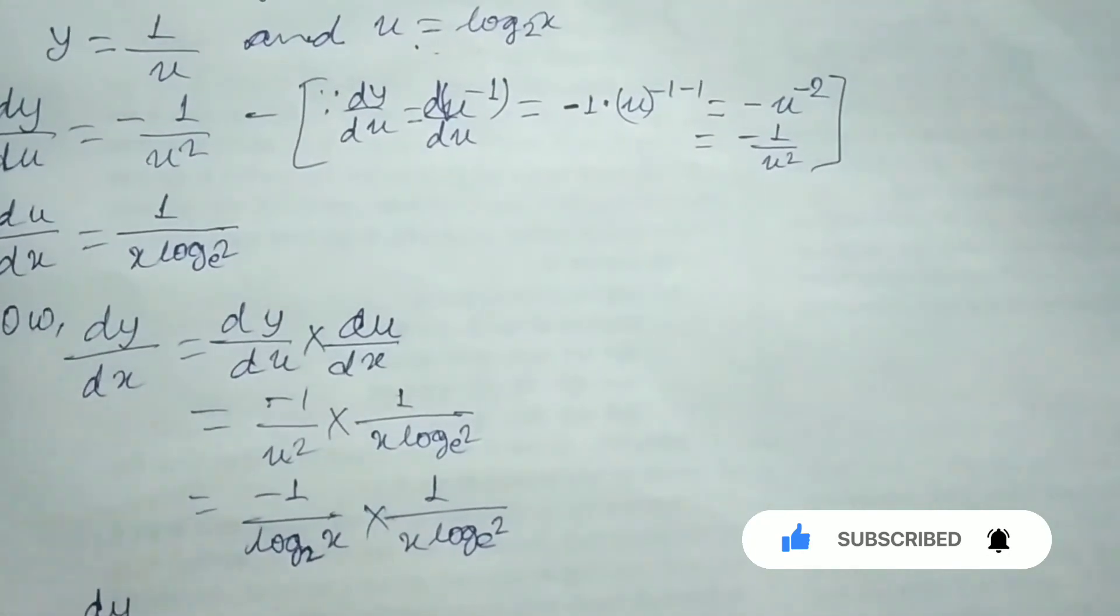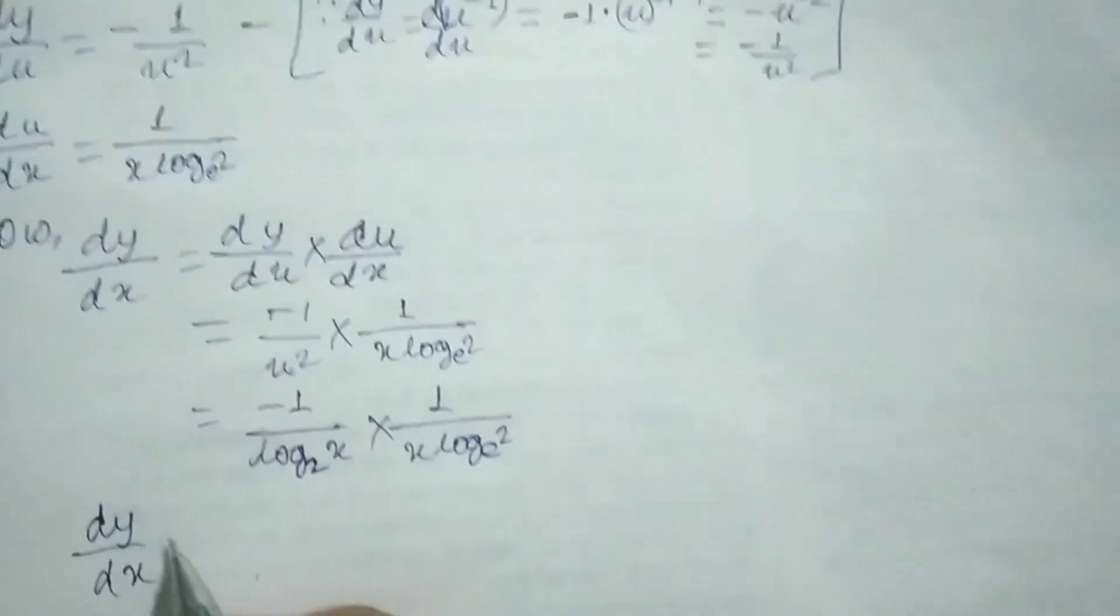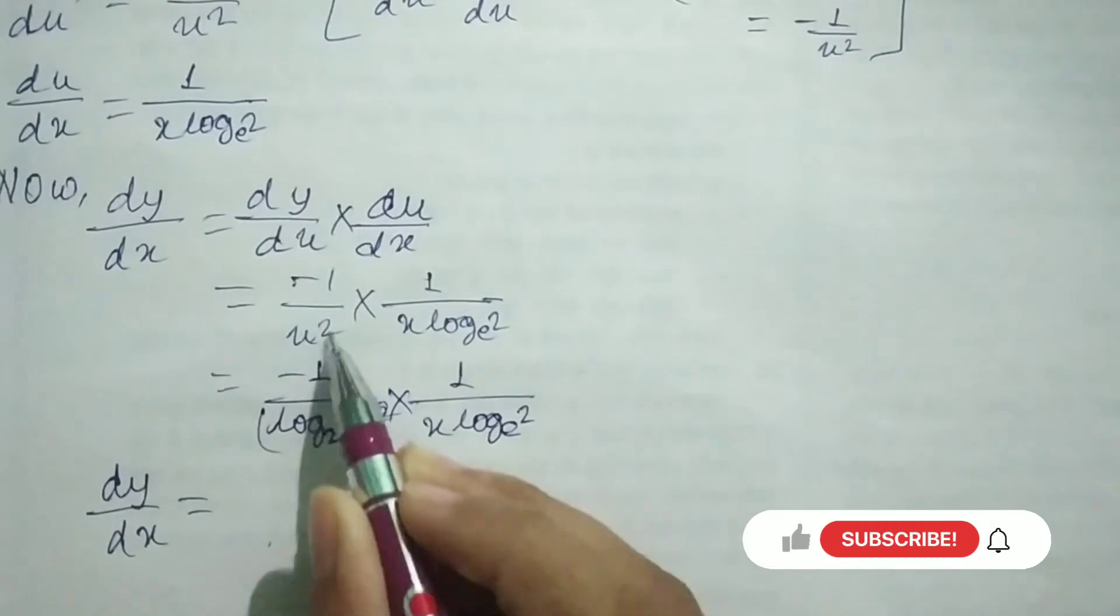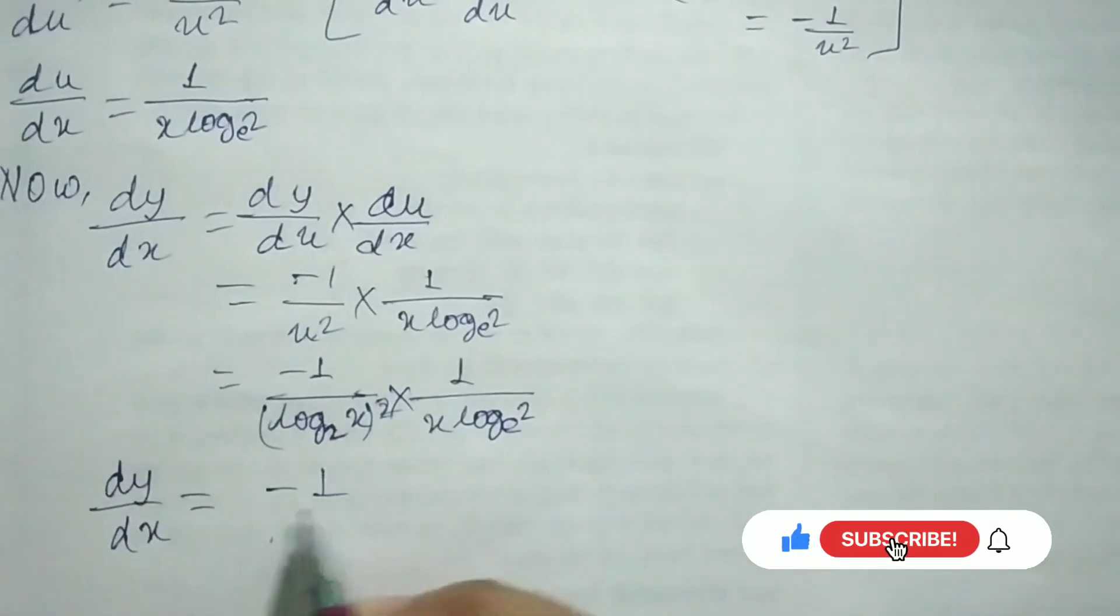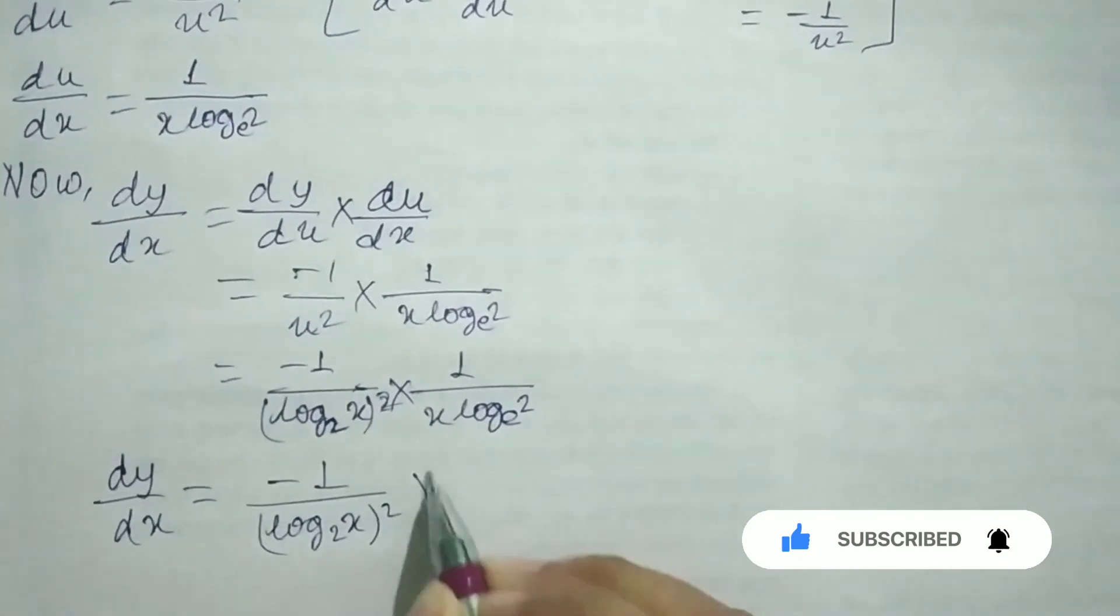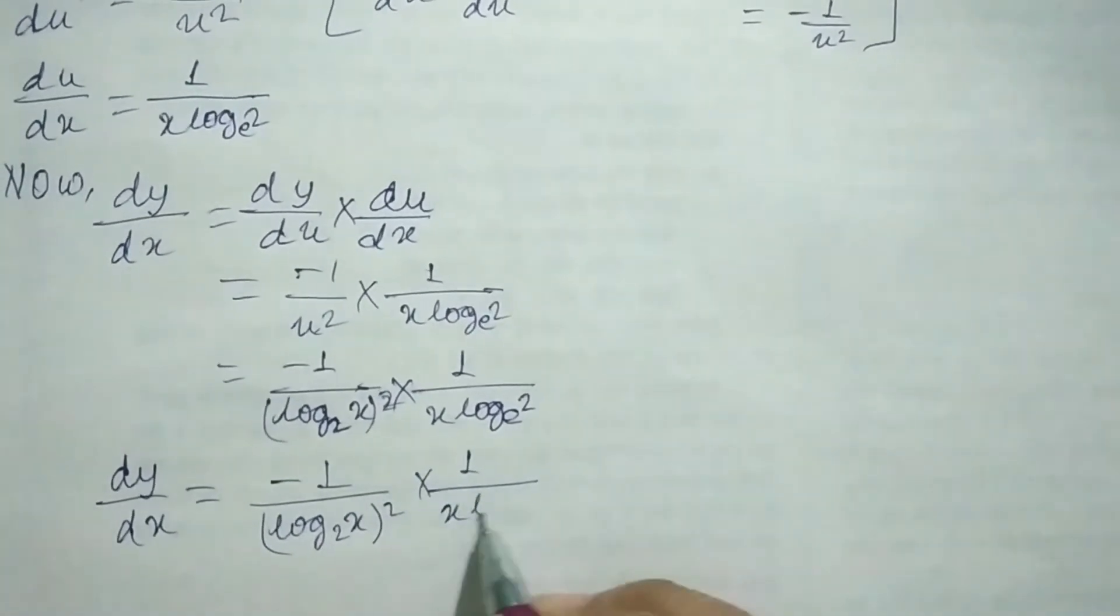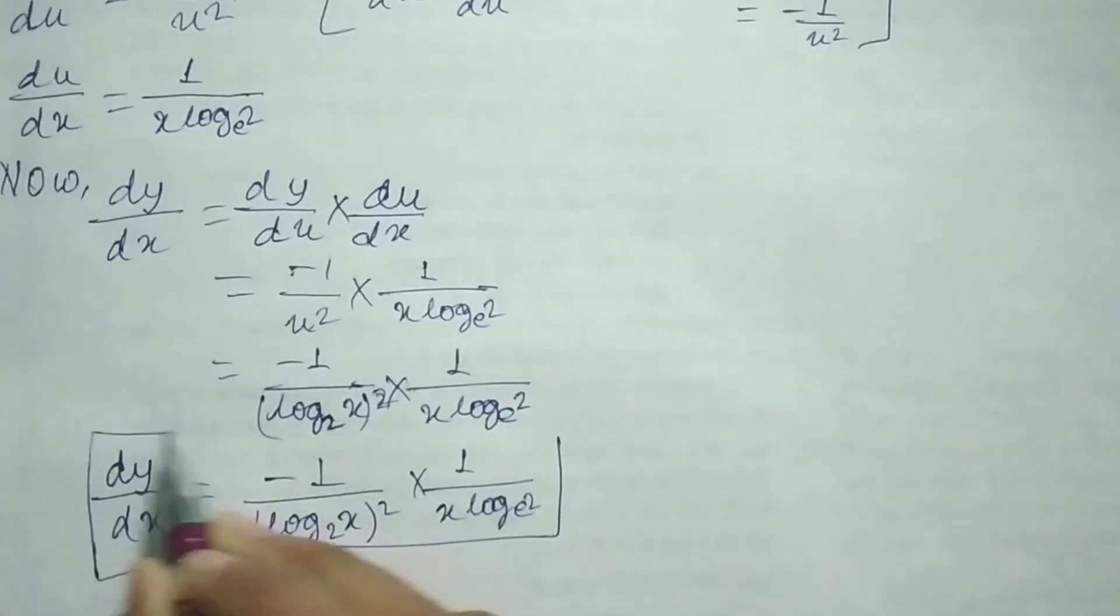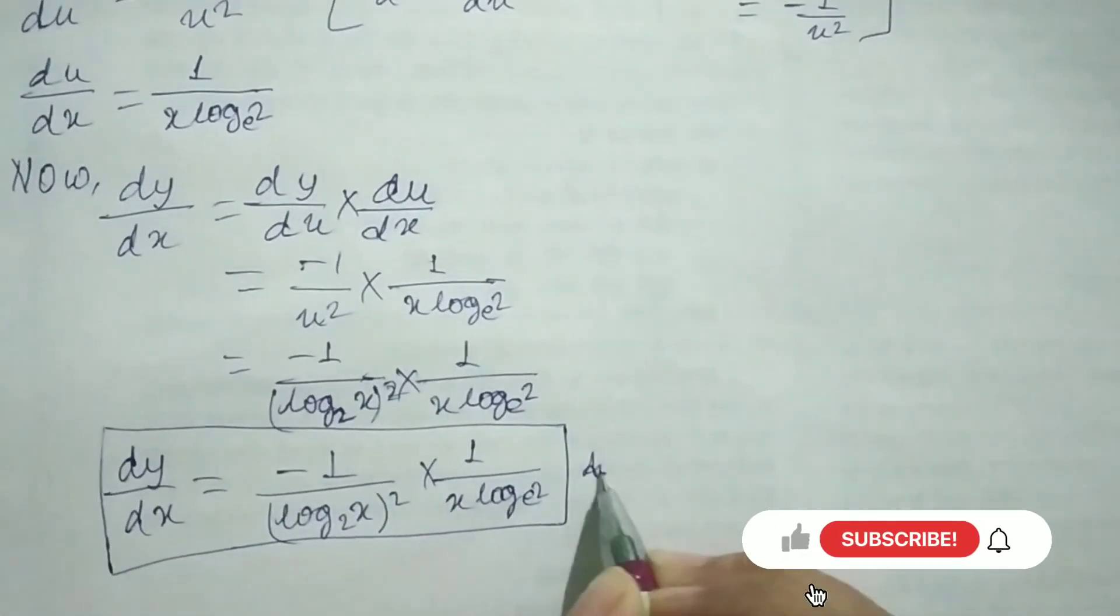So our required answer will be 1 over (log base 2 of x) squared, times 1 over x log base e of 2. This is our required answer.